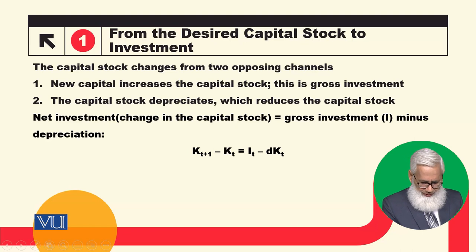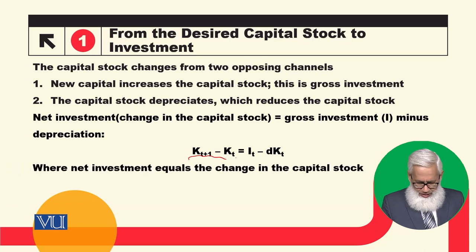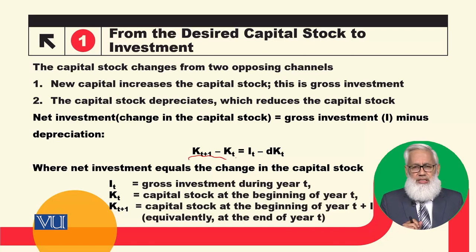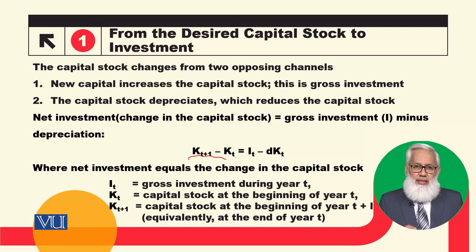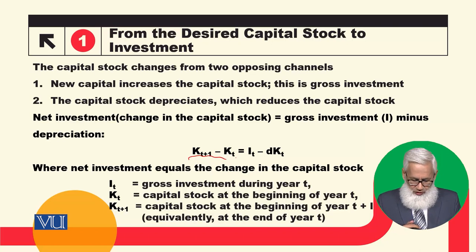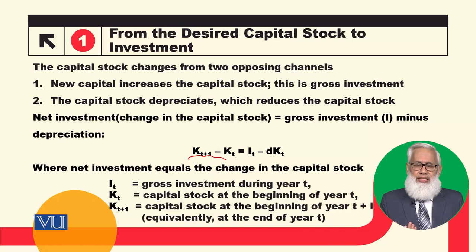Net investment is gross investment minus depreciation. On the left-hand side we have KT+1 minus KT, and this is equal to IT minus DKT. IT is the gross investment during year T. KT is the capital stock at the beginning of year T, and KT+1 is the capital stock at the beginning of year T+1, which equals the capital stock at the end of year T.